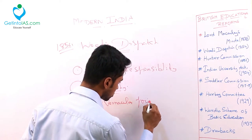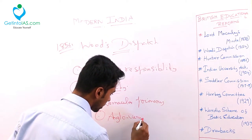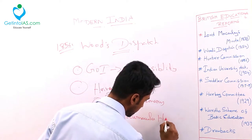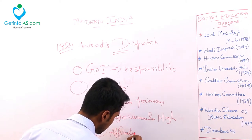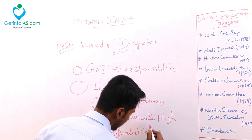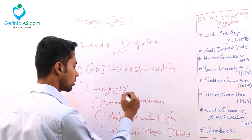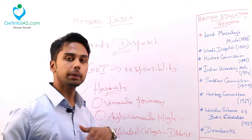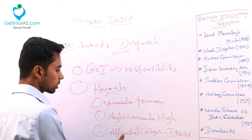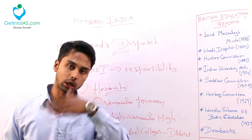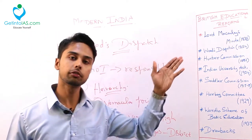The hierarchy given by Wood's Dispatch consists of Vernacular Primary Schools, Anglo-Vernacular High Schools, and Affiliated Colleges. Primary schools would be taught only in vernacular, meaning Indian languages. High schools would be taught in both Anglo and vernacular languages. Also, affiliated colleges at the district level and universities at the township level. These were the hierarchy given by Wood's Dispatch.